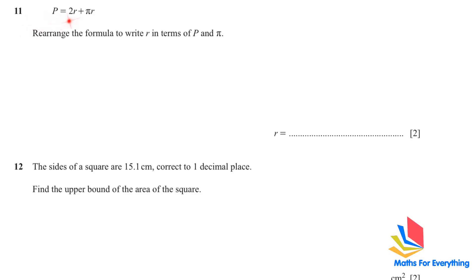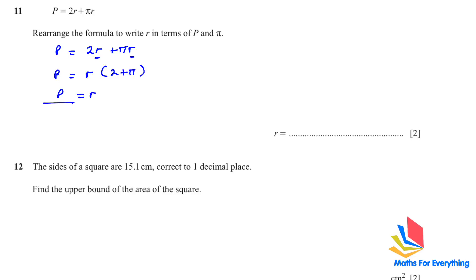Question 11: we have been given a formula and need to write R in terms of P and pi — that is, make R the subject. P equals 2R plus πR. R is common, so factorize: P equals R(2 + π). Dividing both sides gives R equals P over (2 + π).